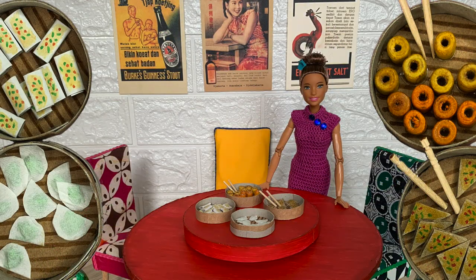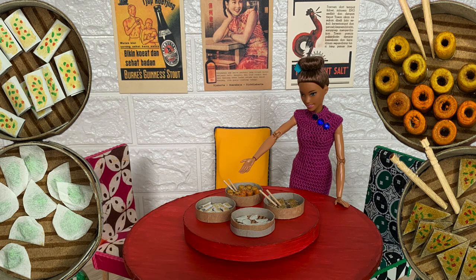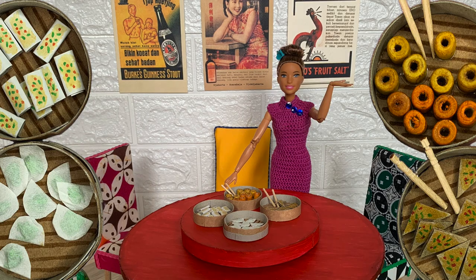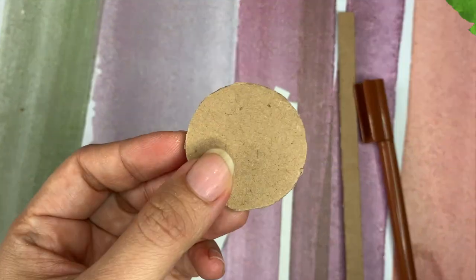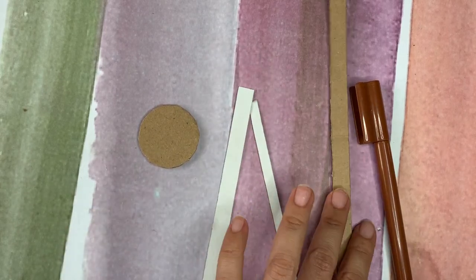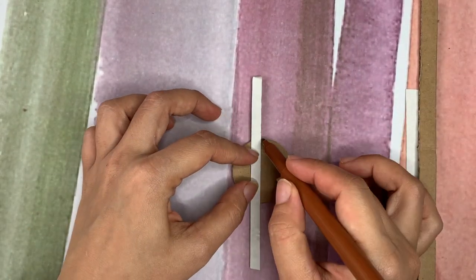And let's get to the menu. I'm going to make 4 types of Chinese dim sum. Let's get to the kitchen. We need to make the dim sum bowl first using some cardboard, thick paper, and a brown marker.